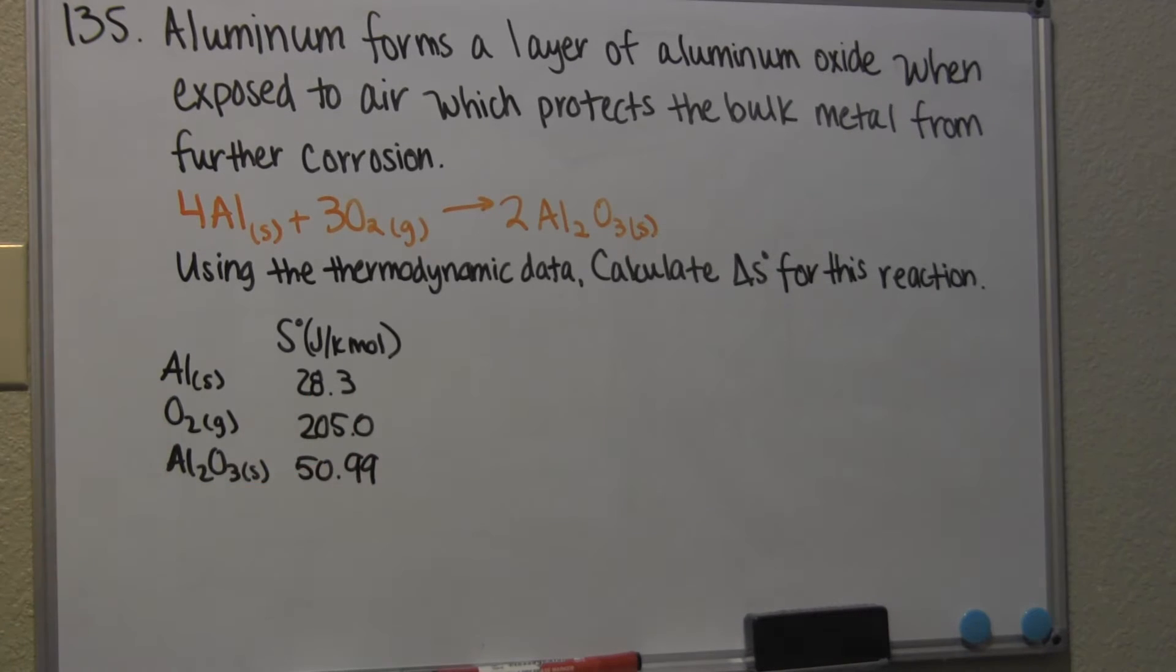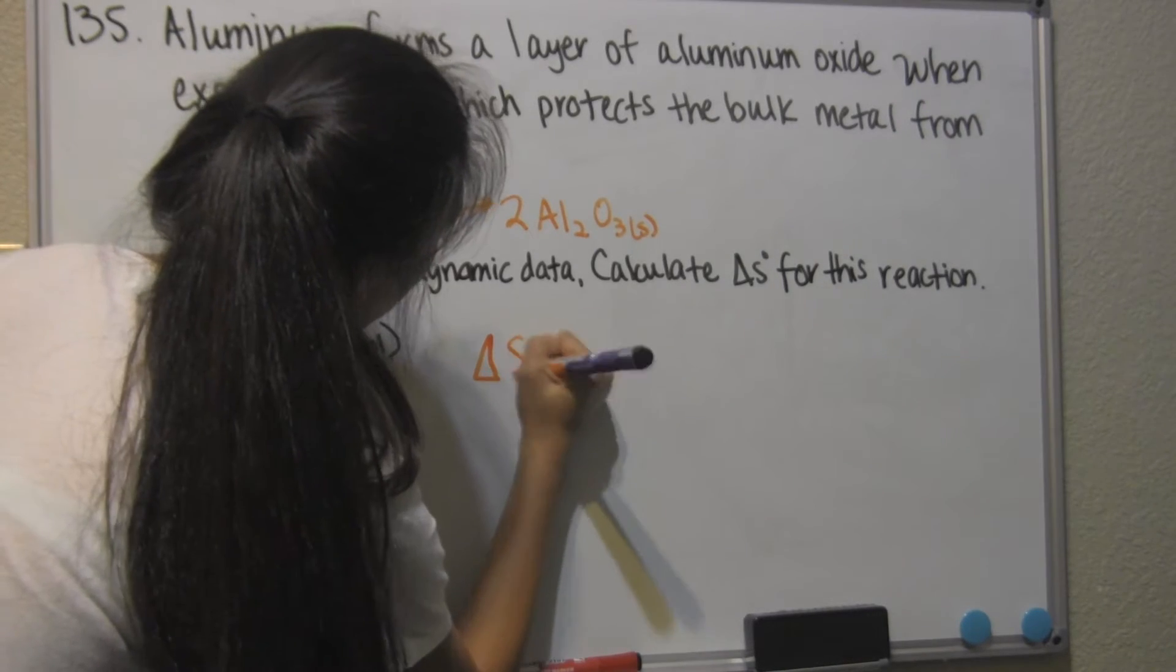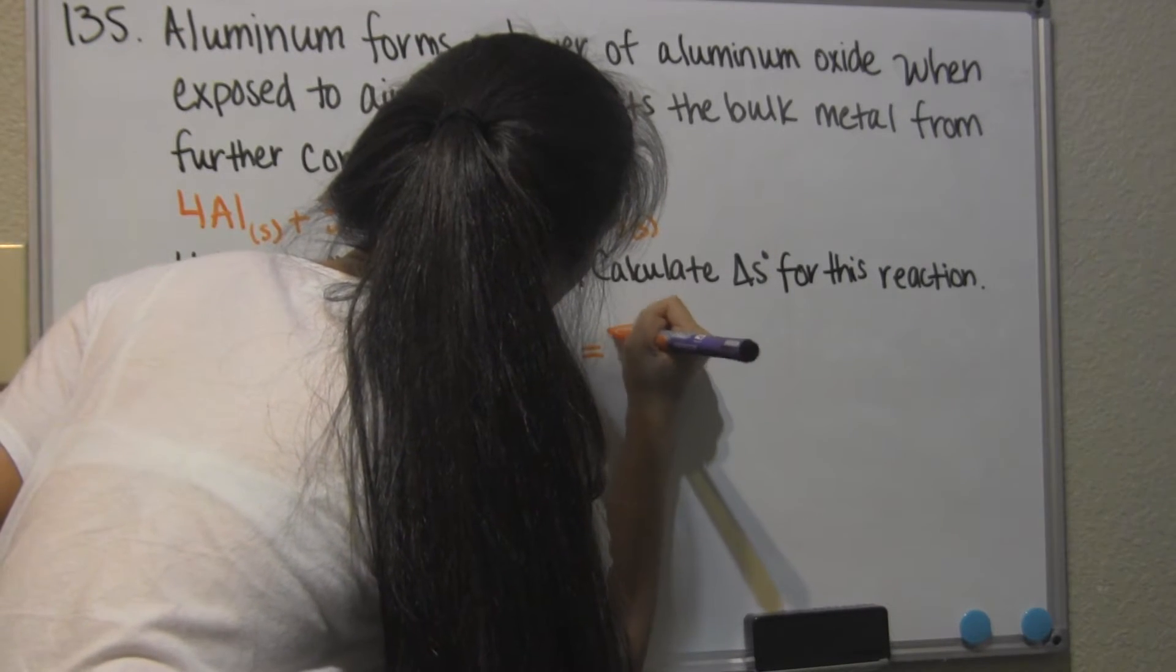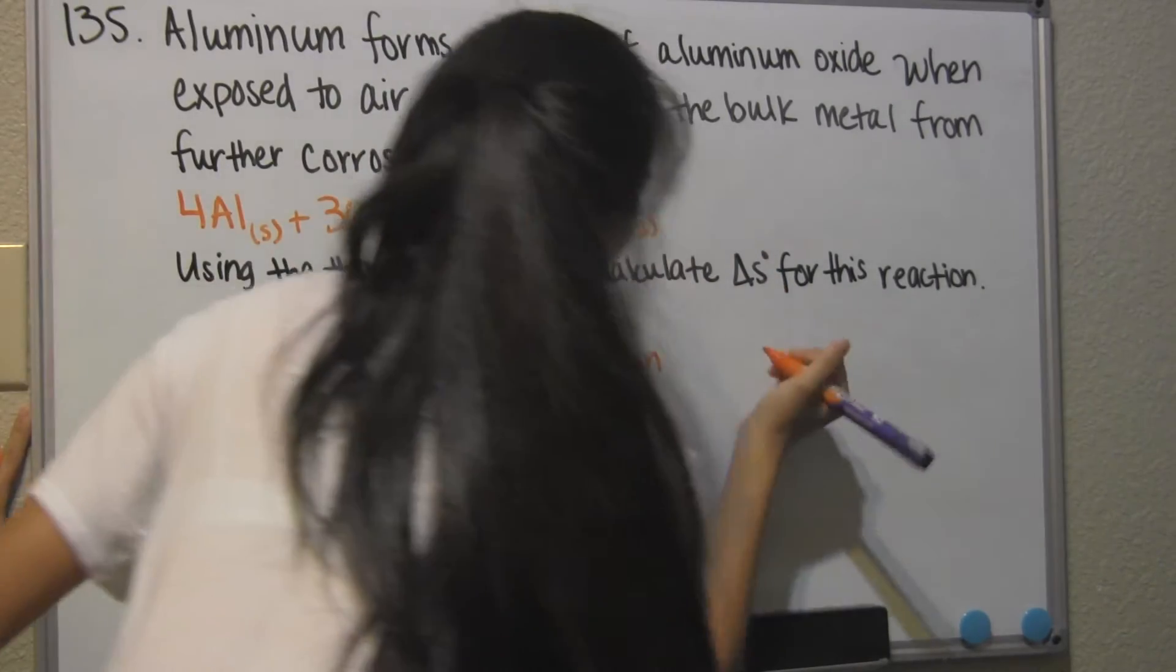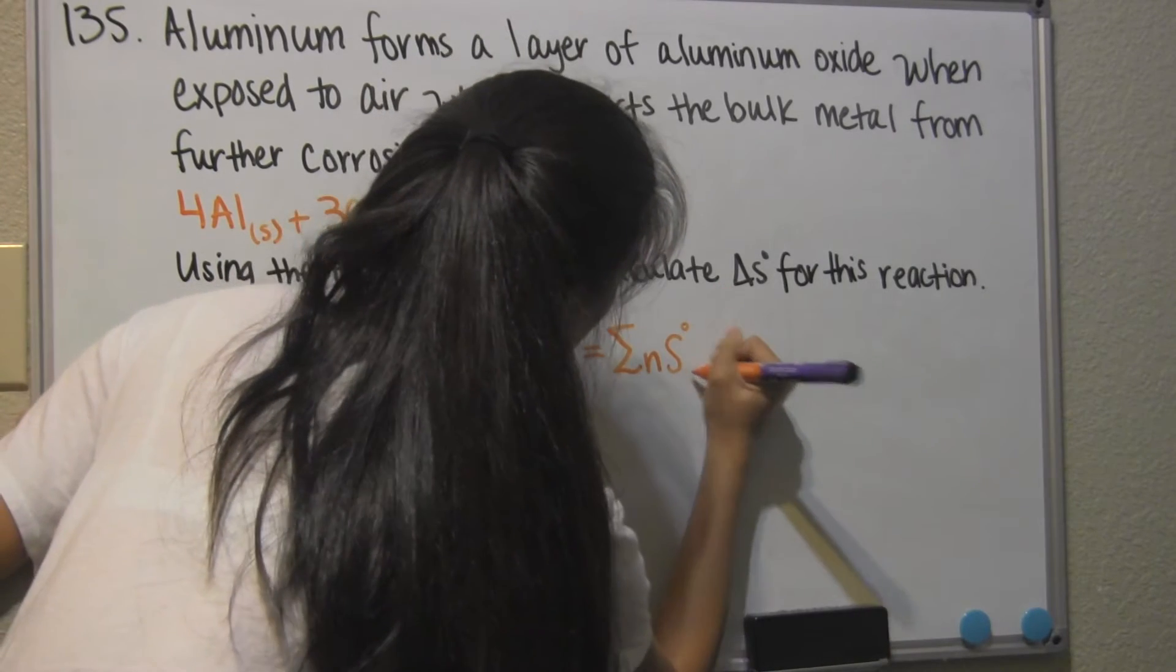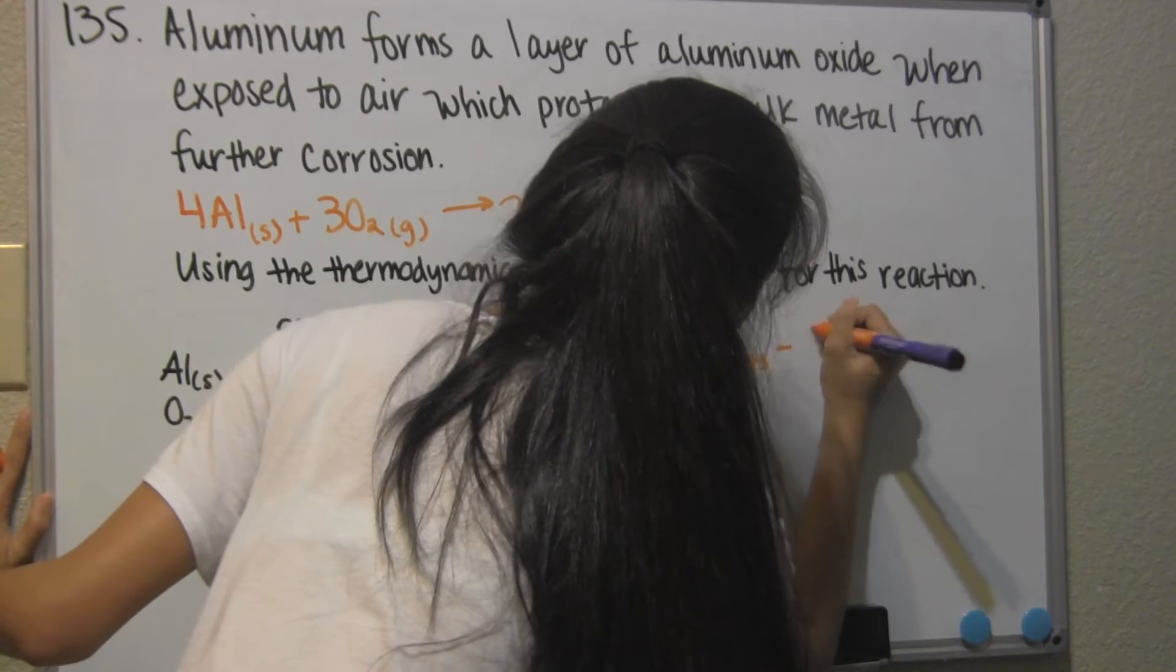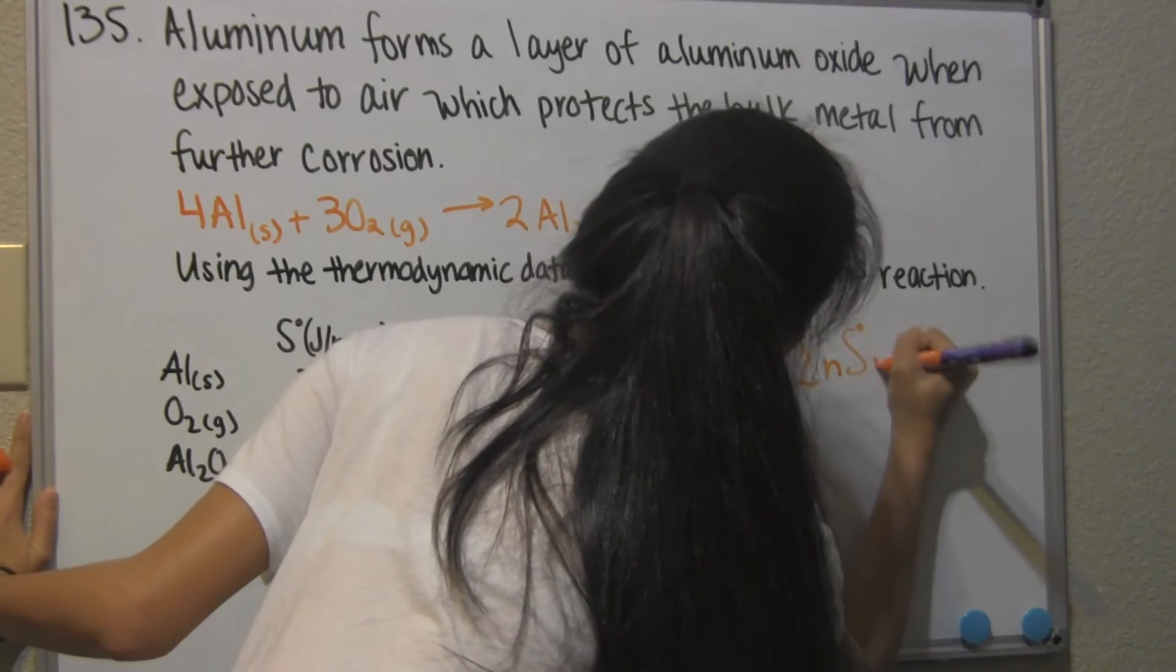calculate the standard entropy for this reaction. So the equation that we're going to use is delta S of the reaction is equal to the summation number of moles of S products minus the summation of Ns reactants.